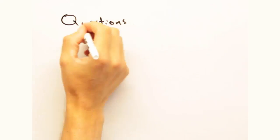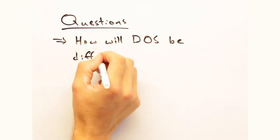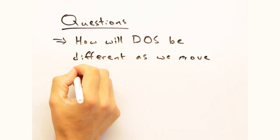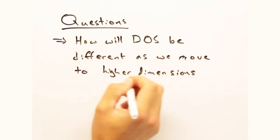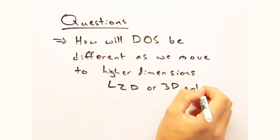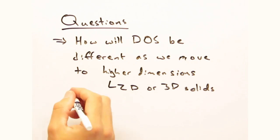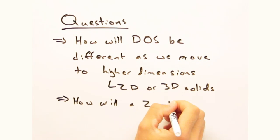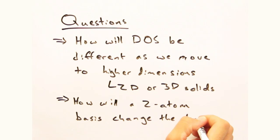As always, we have some questions for you at home. Today we focused on the 1D case, but density of states can easily be carried into multiple dimensions. How would you expect it to be different if we were looking at a 2D or a 3D solid? Second, we made all of these assumptions assuming one atom on each lattice point. How would a 2 atom basis change the density of states if it does at all?